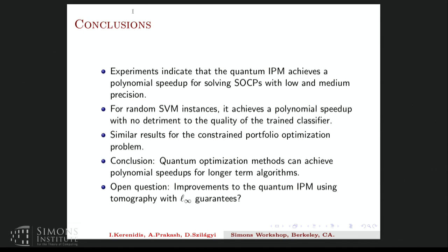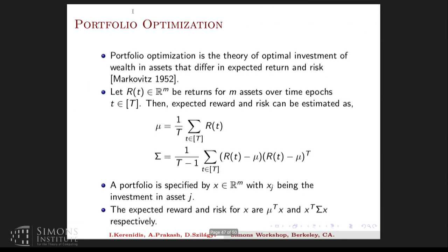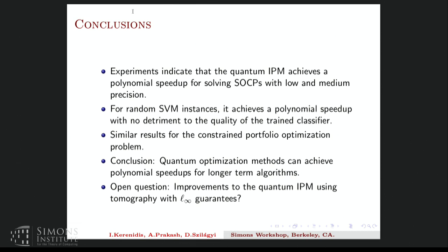And the conclusion I'd like to make is that quantum optimization methods can achieve polynomial speedups for the longer term algorithms. And the main open question with regard to quantum interior point methods is what one can get if one replaces the quantum tomography with the weaker L-infinity norm guarantees. So this would speed the quantum algorithm up by quite a lot. But one needs to carry out classical analysis to establish such a method. So there's some hope that this might work because recent classical LP algorithms do such kinds of analysis. Okay, so I'd like to conclude there unless I have time to go over the portfolio optimization. So maybe we can stop here.